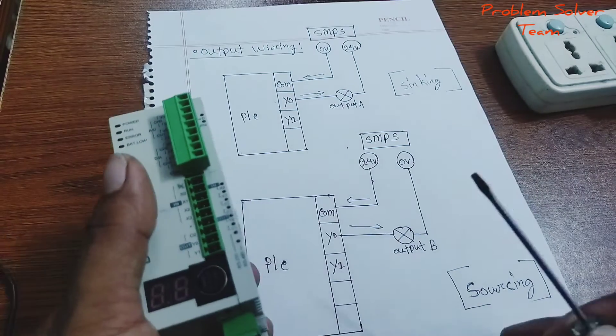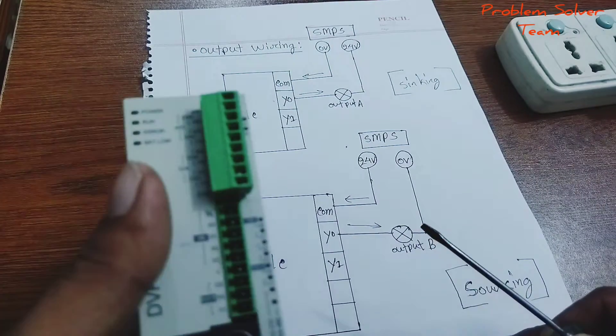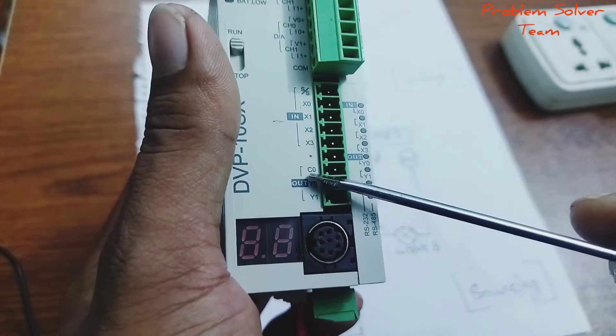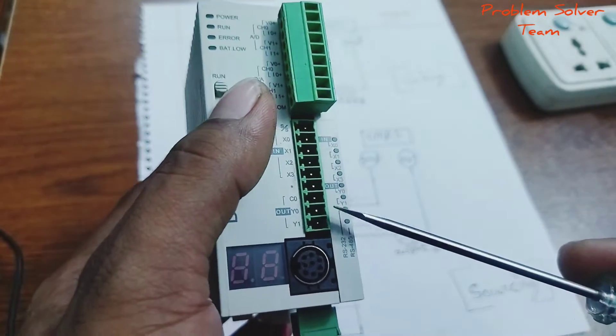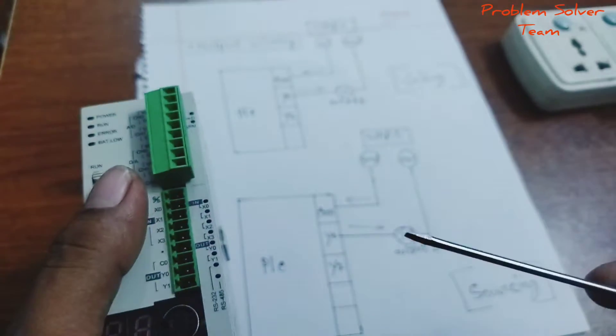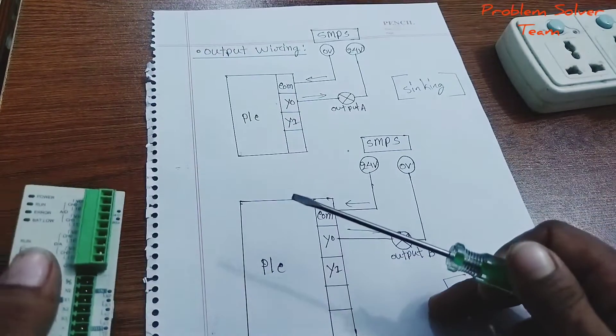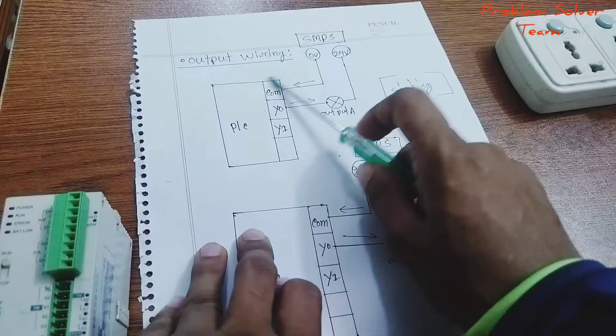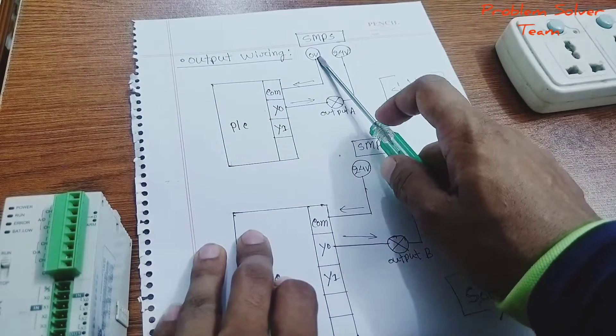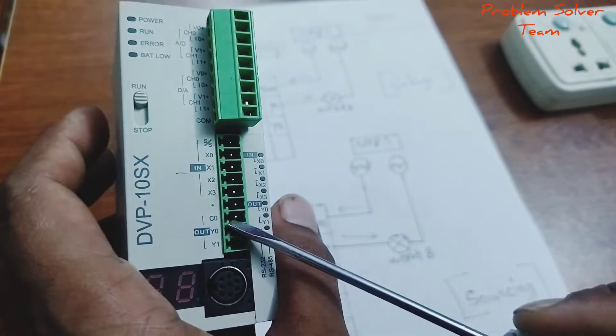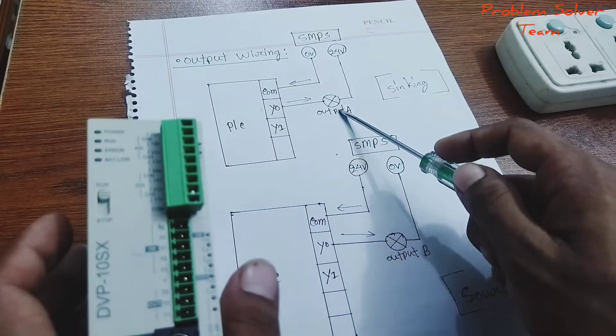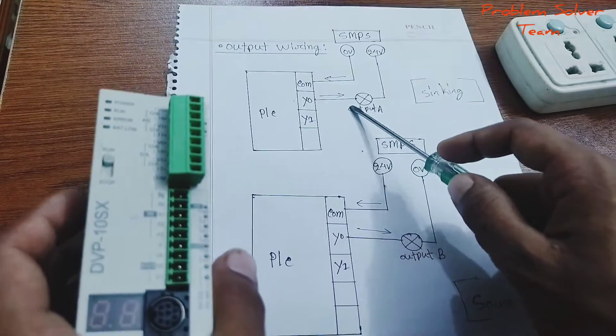Hello guys, next topic is output wiring connection. We'll see common Y0, Y1, and the wiring for sinking and sourcing. This diagram here shows output wiring SMPS to 0V, this connects to the common pin. The common pin 0V and Y0, Y0 to output A, then connect 24V SMPS.